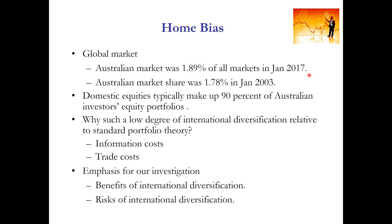Think about Australia, for example. In January 2017, the Australian market comprised about 1.9% of the market capitalization of all equity markets around the world. However, domestic portfolios of Australian investors tend to be comprised of 90% Australian equities. So the question is, why is there such a low degree of international diversification compared to what portfolio theory suggests us to do?